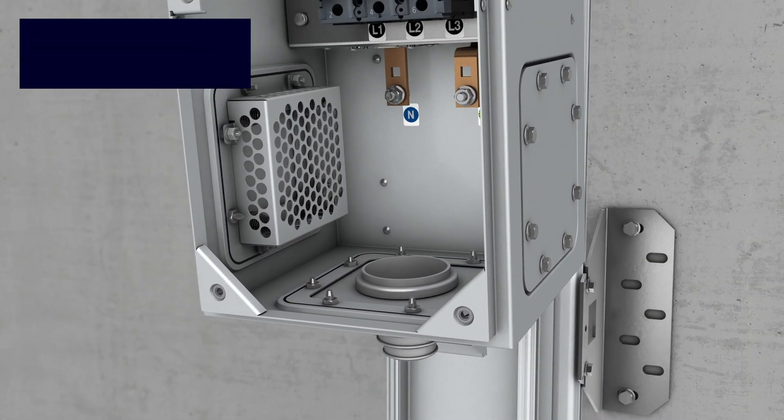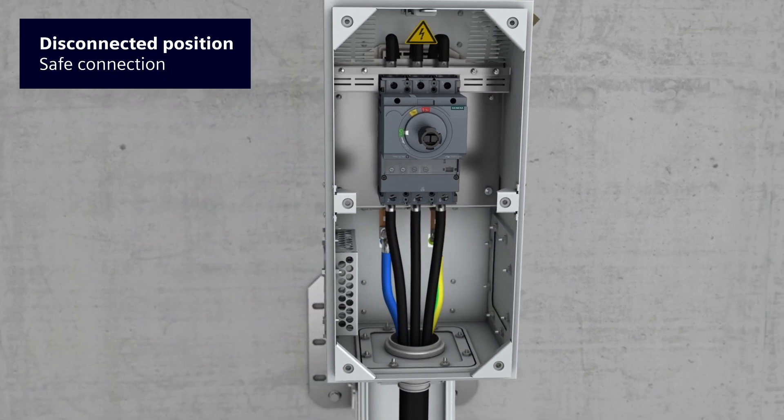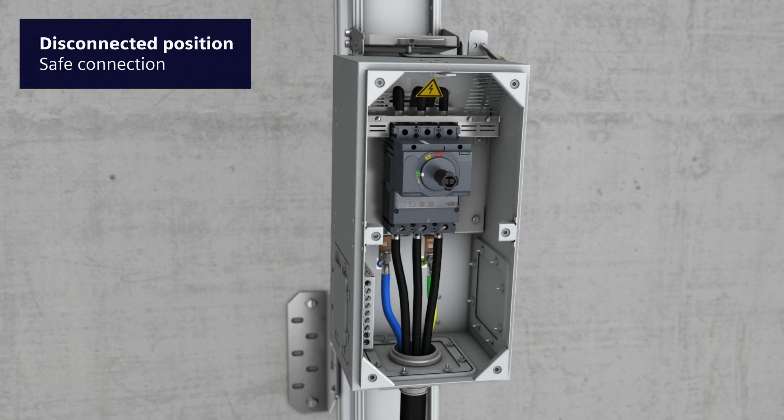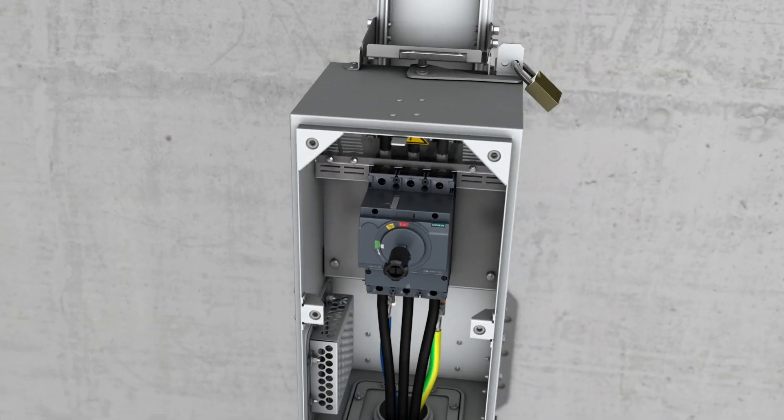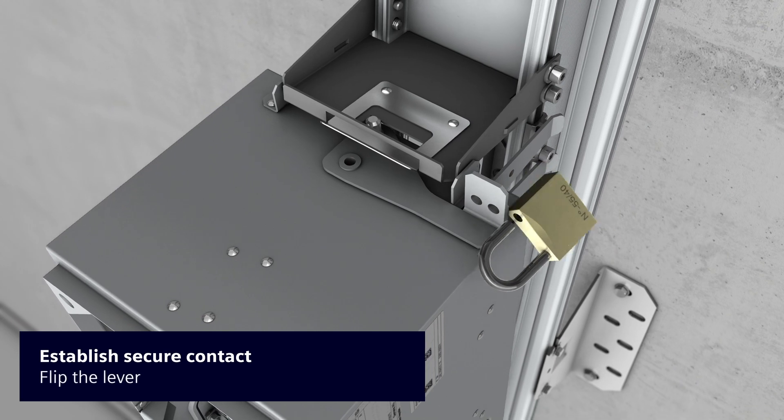The electric connection of the consumer to the tap-off unit can now be carried out safely by simply connecting the consumer cables. Electric contact between the tap-off unit and the bus bar system must not be established before all cable connections have been completed and secured.